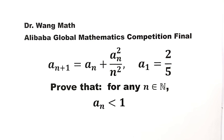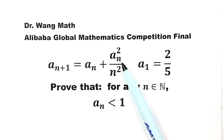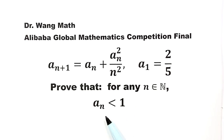In this video, we'll be tackling question number 1 from the 2023 Alibaba Global Mathematics Competition final. Given the sequence: aₙ₊₁ equals aₙ plus aₙ squared divided by n squared, with a₁ equals 2 over 5. We need to prove that for any natural number n, aₙ is less than 1.